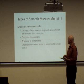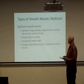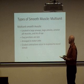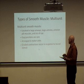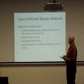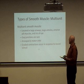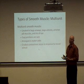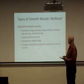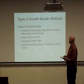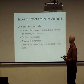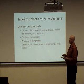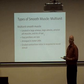Finally, we can also have what are called multi-unit smooth muscles. In this case, the smooth muscle is arranged in motor units, responding to the autonomic nervous system, and we can get either a very small contraction or a very large contraction. We often find this type of muscle in the airways of our respiratory system, in large arteries, and also in the iris of the eye. Thank you.